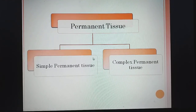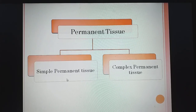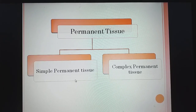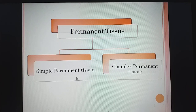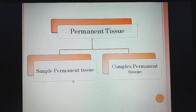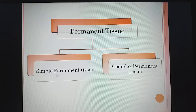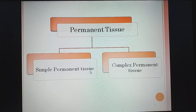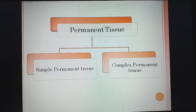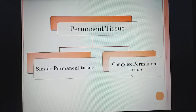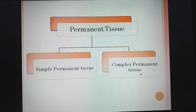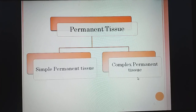Permanent tissue is of two types: simple permanent tissue and complex permanent tissue. Simple permanent tissue means tissues which are similar in structure — similar cells combined together. Whereas complex permanent tissue means the cells are different but they coordinate with each other to perform a particular function.